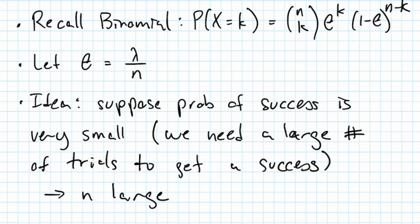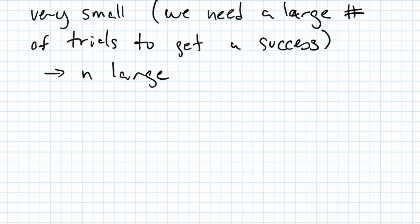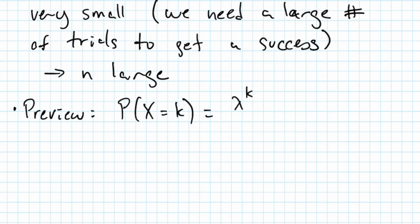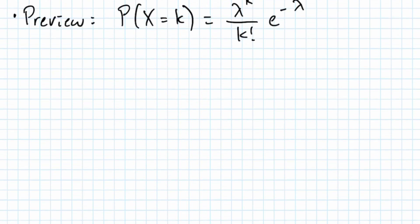I'll give you a little preview of the answer and then show how we get there. The preview: P(X = k) = λ^k / k! × e^(−λ). For this distribution, λ is going to be the parameter. Here's the derivation.